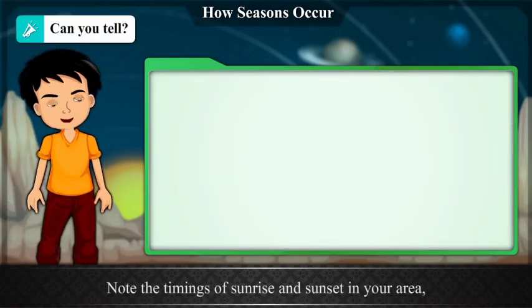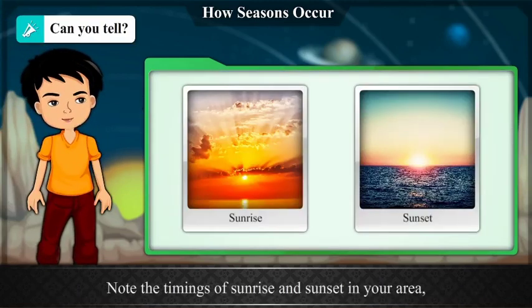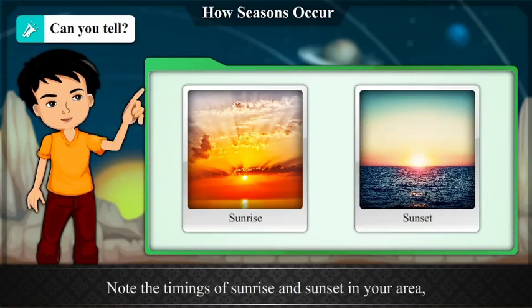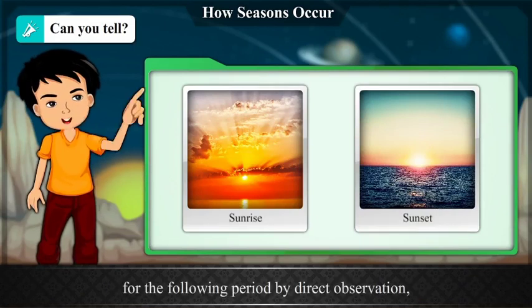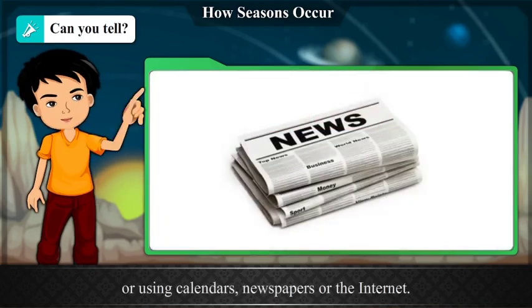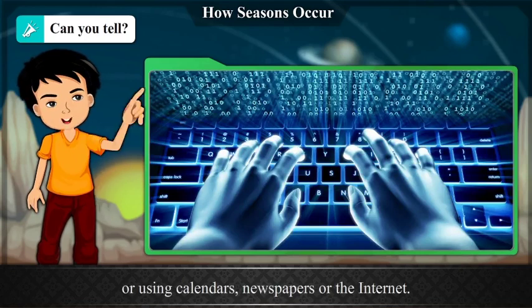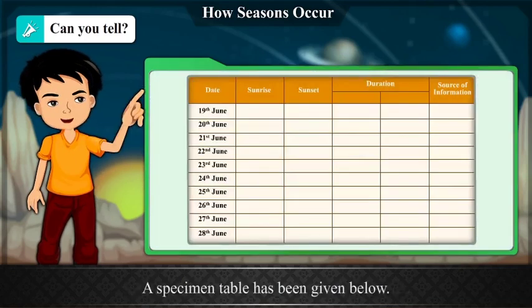Can you tell? Note the timings of sunrise and sunset in your area for the following period, by direct observation or using calendars, newspapers, or the internet. A specimen table has been given below.